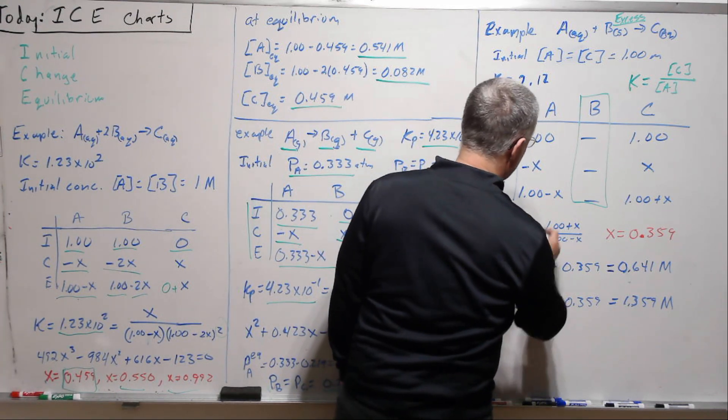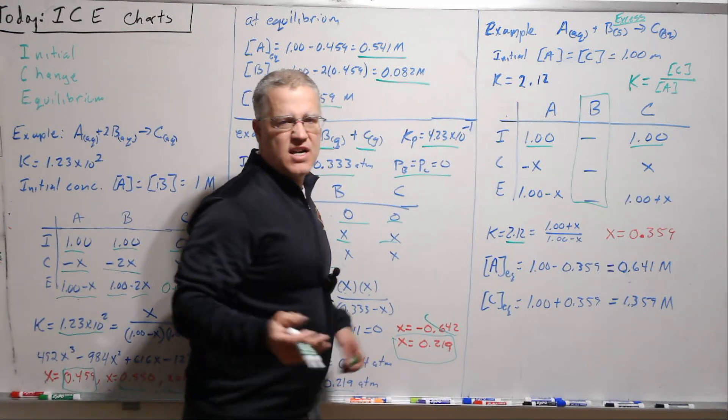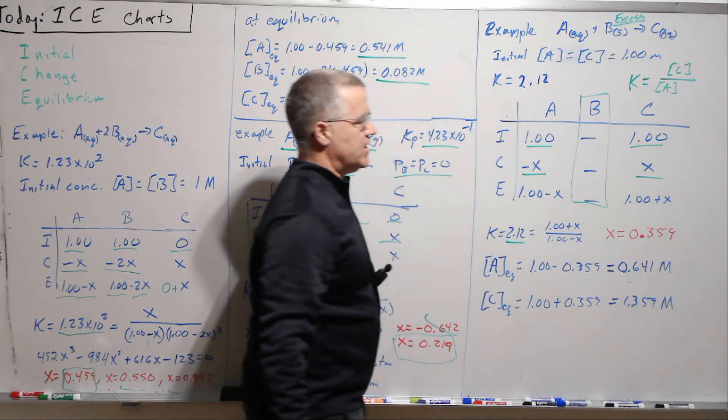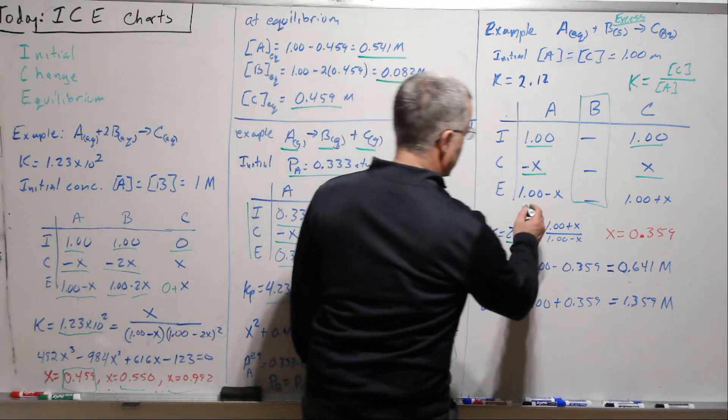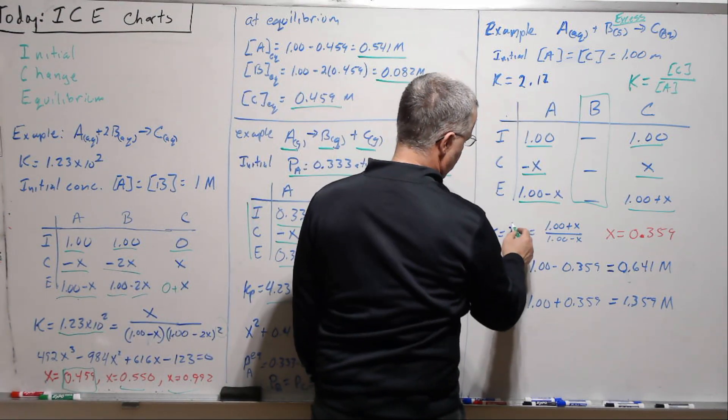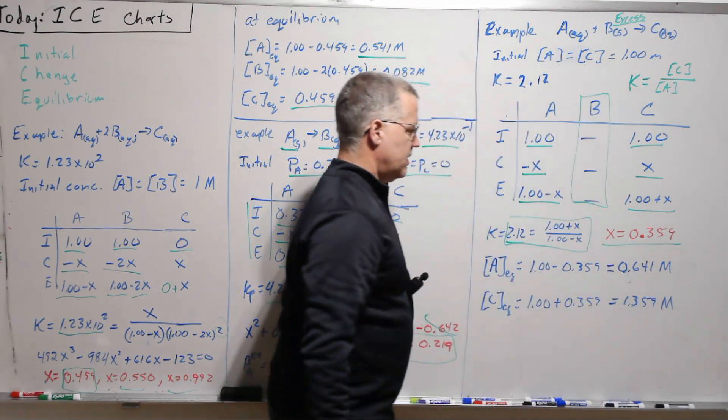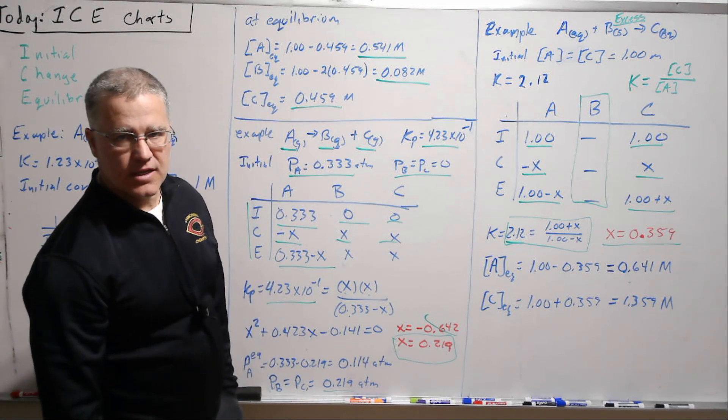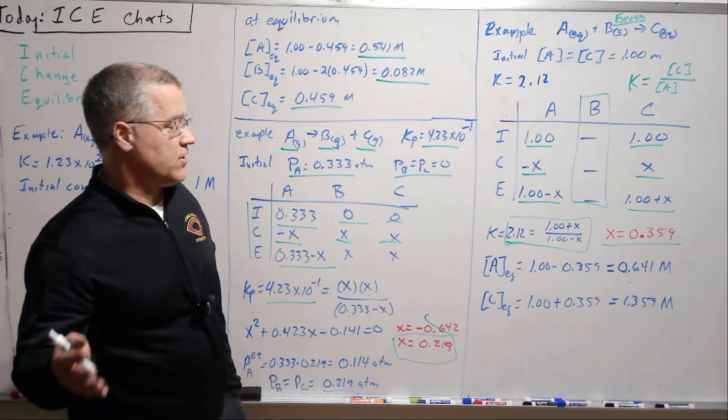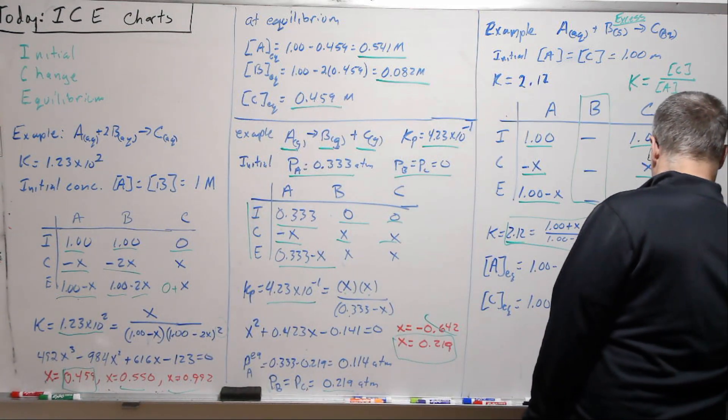We certainly could end up, what we would do is we would calculate this ICE chart. All right, so then we have 1 and 1. We're going to start with some product here now, C around. And I just chose them to both be the same. They could be anything. A is going to be a minus X, so C is going to change by X. And so this is going to be 1 minus X, this is going to be 1 plus X. We've got a K of 2.12. And so here's our equation. We can solve this pretty readily. And we get, because it's just a linear equation, 0.359. There's only one solution here because it's linear, and so this is a real physical solution. And so then we have that.